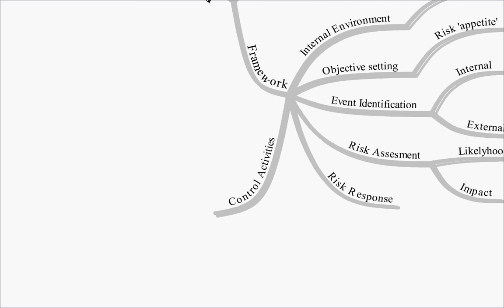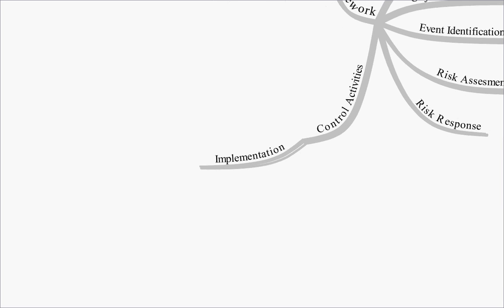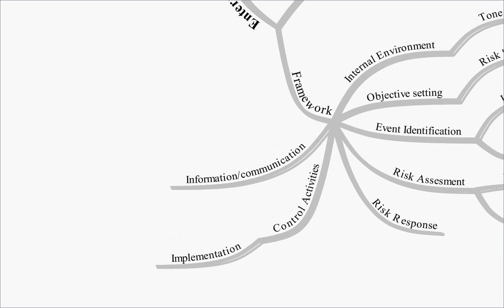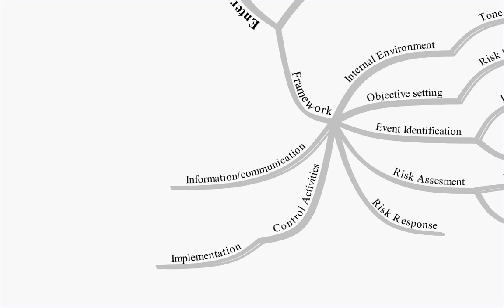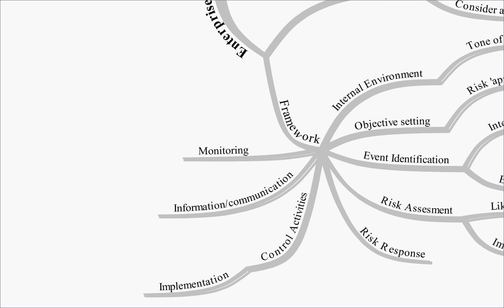We're going to then implement some control activities because that's going to ensure that we have an adequate response or that we stop the risk happening in the first place. So this information has to be communicated throughout the firm. Everyone needs to be aware of the risks so that everyone can undertake the control activities to stop the risks happening or to control them. And this will then have to be monitored by management. So that's the framework for enterprise risk management.